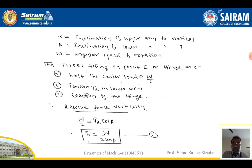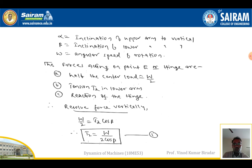The forces acting on hinge point E are: half the central load W/2 (since we consider only half the diagram), tension T2 in the lower arm, and the hinge reaction. Resolving forces vertically: W/2 downward equals T2·cosβ upward, giving T2 = W / (2·cosβ). This is Equation 1.